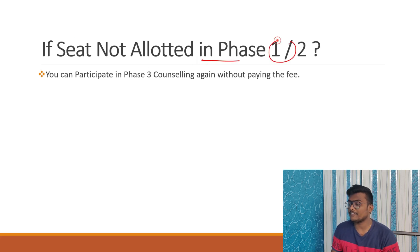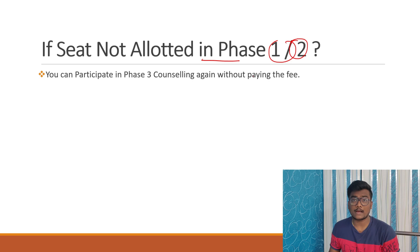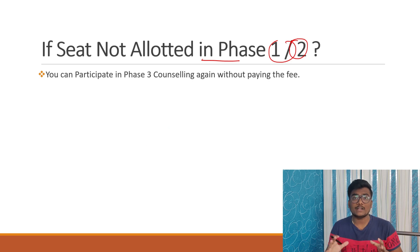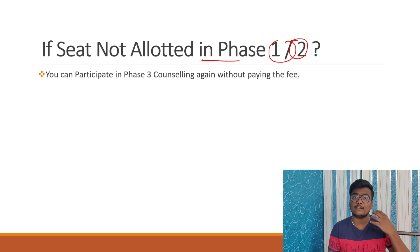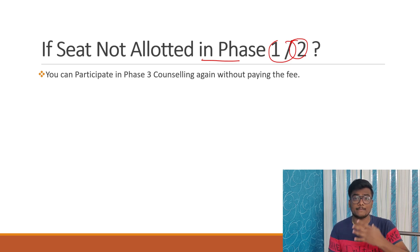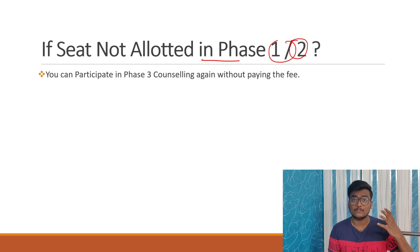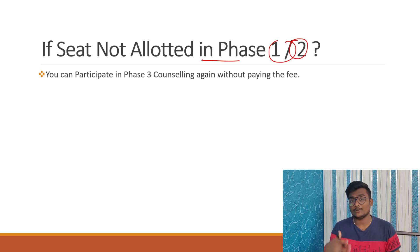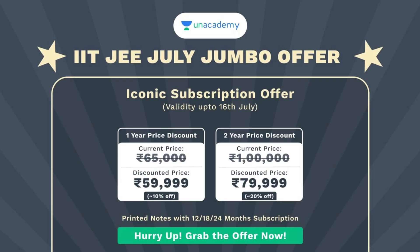Many people are asking: we didn't get an allotment in Phase 1 or Phase 2, even though we participated — what can we do? Don't worry. Without paying any other fee, you can easily participate in the next upcoming round, which is Phase 3 of VAIT counseling. You will be given one more chance.